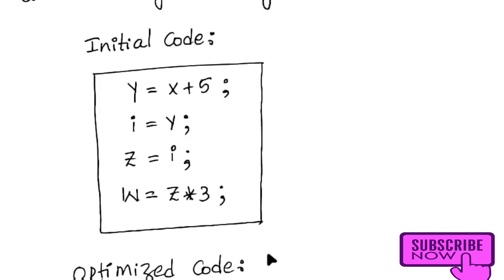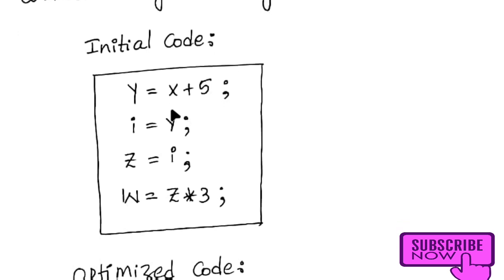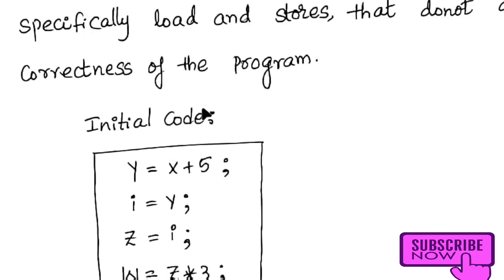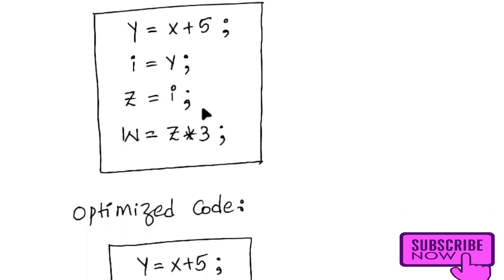Here is a basic example of redundant load and store elimination. Consider: y = x + 5, i = y, z = i, w = z * 3. In this code, i is assigned y, then z is assigned i, and w uses z. There is unnecessary intermediate storage here.